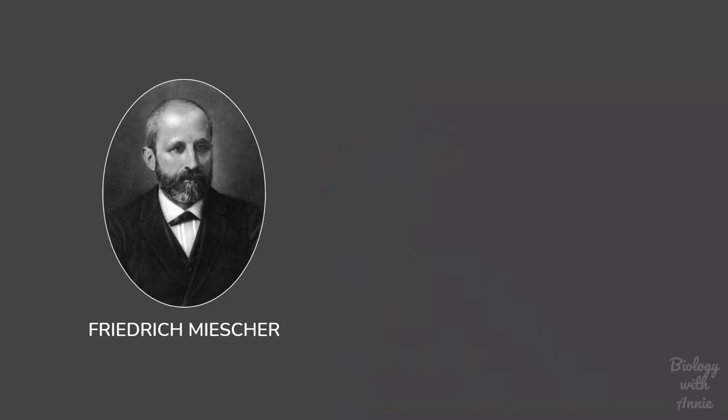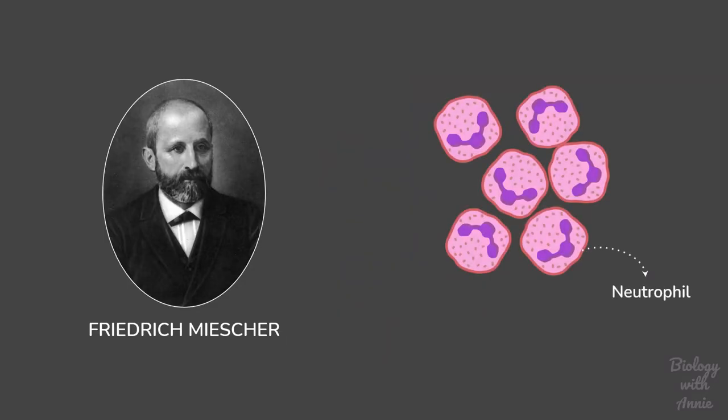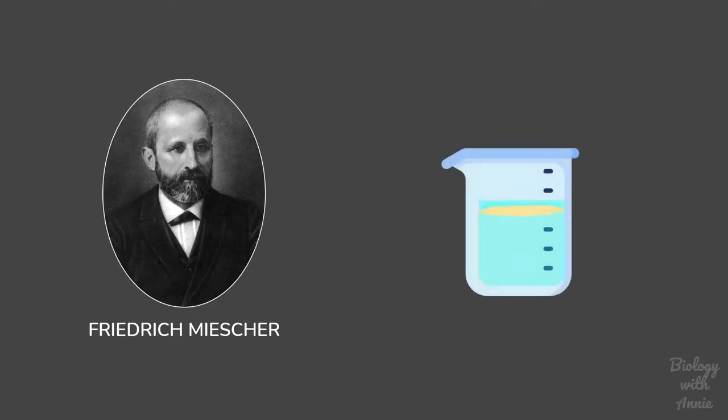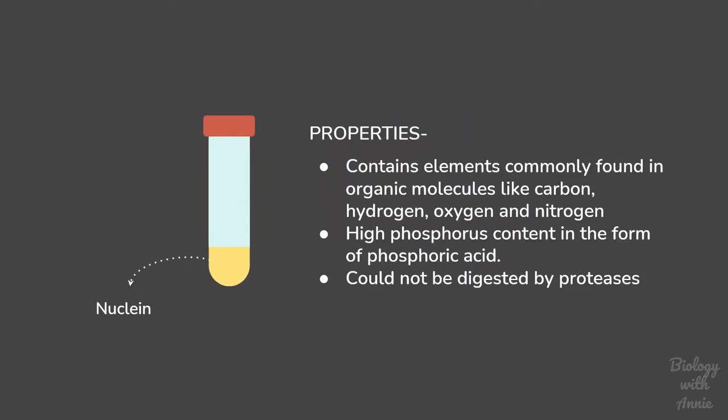Miescher was studying the chemical composition of white blood cells when he found a novel substance inside the nucleus which had unique properties. He called this substance nuclein, and it was later renamed nucleic acid because of its acidic nature.